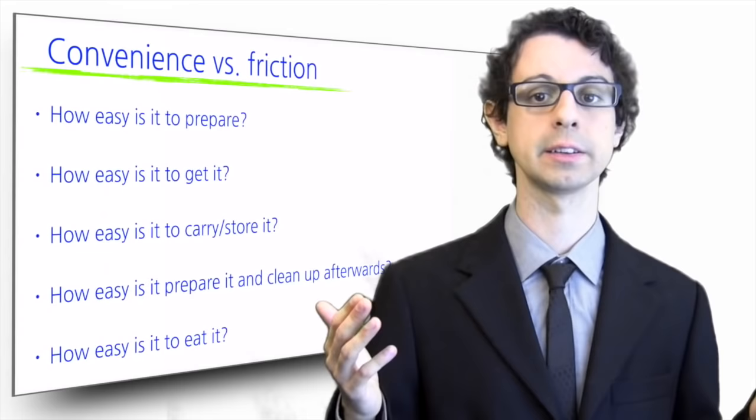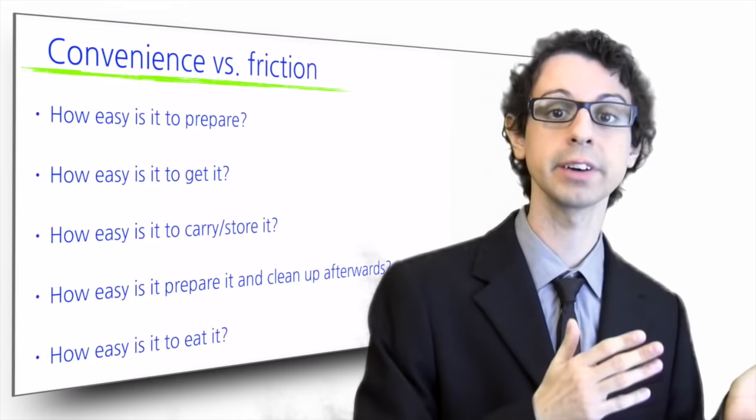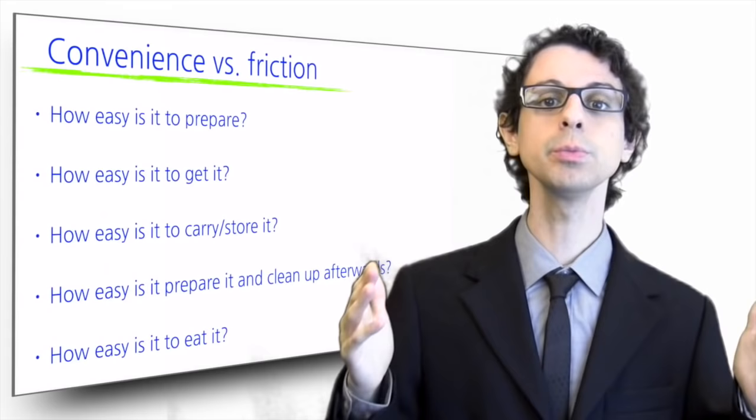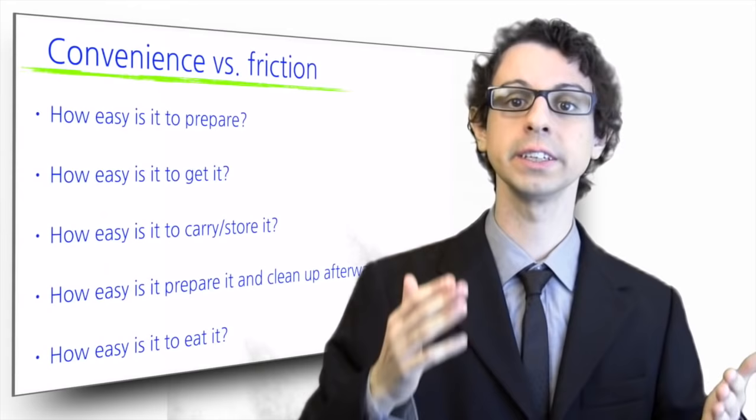But preparation is not the only convenience requisite. How easy is it to get it? Getting fast food or canned food may be easier than getting fresh fruit or fish. Maybe I have to drive a longer distance. We are so lazy that at a salad bar, most people tend to get the food items that are closer to them compared to what's in the back. And they get less of it if the serving utensil makes it harder to get it.